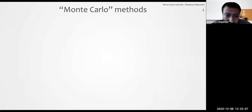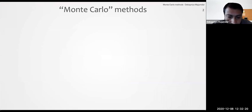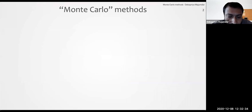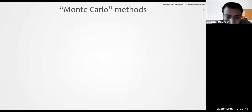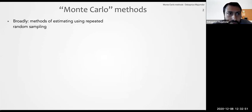Today we are going to look at Monte Carlo methods for reinforcement learning. Monte Carlo is actually a casino in Monaco. The Monte Carlo methods have a long history, and eventually this name became popular because such methods were used in some kind of prediction game in the Monte Carlo casino. Essentially, it's a very simple and intuitive approach for estimating using repeated random sampling.